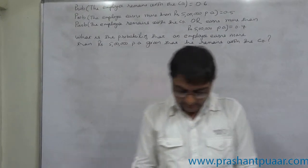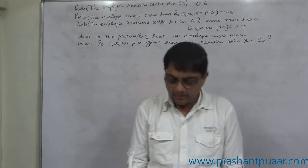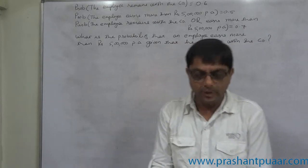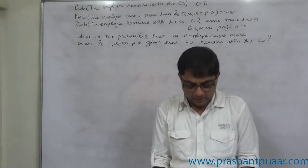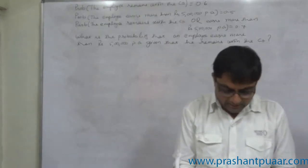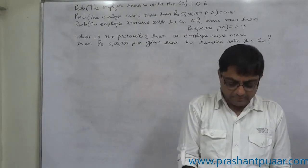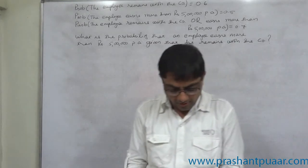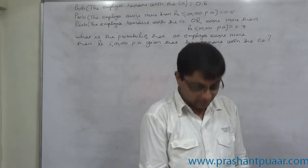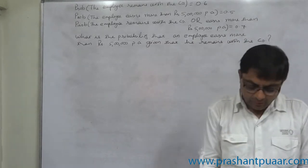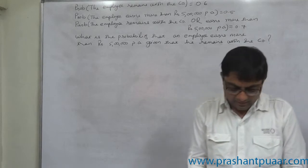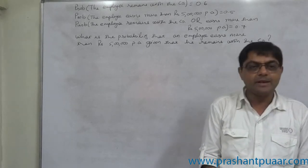The probability that an employee will remain with the company is 0.6. The probability that an employee earns more than Rs.5 lakh per annum is 0.5. The probability that an employee remains with the company or earns more than Rs.5 lakh per annum is 0.7. What is the probability that an employee earns more than Rs.5 lakh per annum given that he remains with the company?